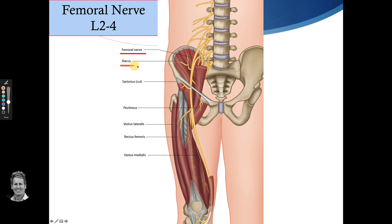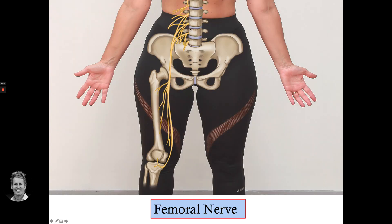The femoral nerve continues as a sensory nerve known as the saphenous nerve, supplying the medial lower part of the lower leg. Looking at the femoral nerve picture, you can see it coming down along the anterior part of the thigh.